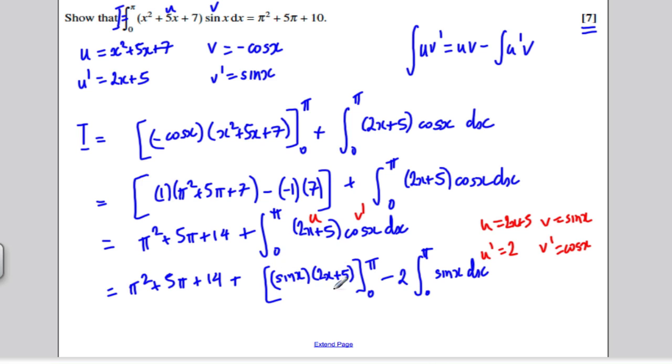If I work this out, putting π in gives 0, putting 0 in gives 0. So the uv term disappears. I get π squared plus 5π plus 14 minus 2 times the integral of sine x. The integral of sine x is minus cos x, evaluated between 0 and π.